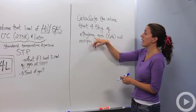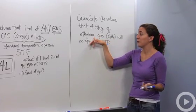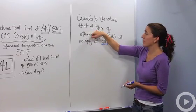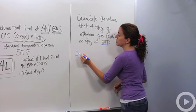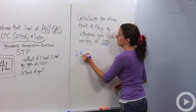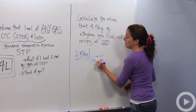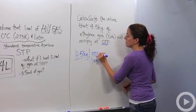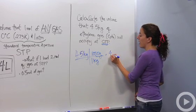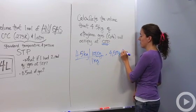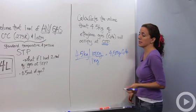So we want to figure out how many moles of ethylene gas we have to figure out the molar volume. Well, we have 4.5 kilograms. We want to change that to grams because I don't like kilograms. So one kilogram is equal to 1,000 grams. And so we have 4,500 grams of ethylene. Awesome.